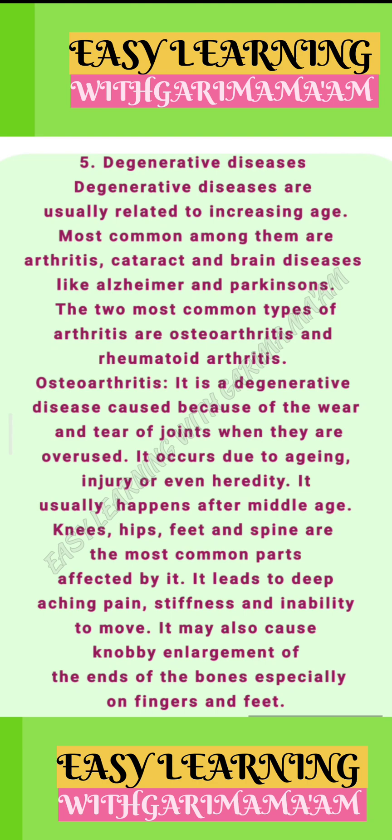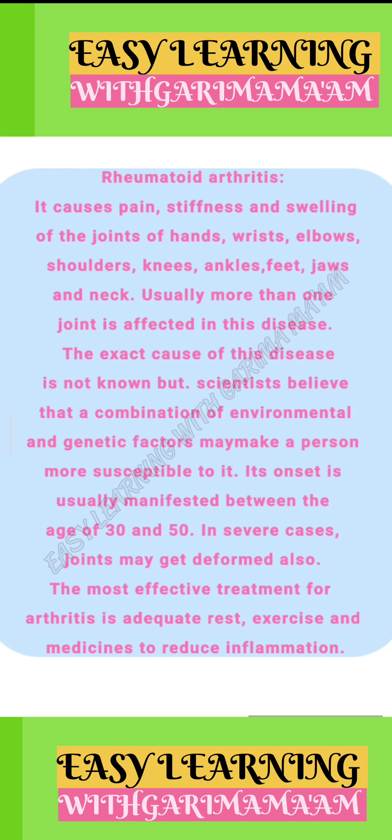Osteoarthritis occurs due to aging, injury, or even heredity. It usually happens after middle age. Knees, hips, feet, and spine are the most common parts affected by it. It leads to deep aching pain, stiffness, and inability to move. It may also cause knobby enlargement of the ends of the bones, especially on fingers and feet. Rheumatoid arthritis causes pain, inflammation, stiffness, and swelling of the joints of hands, wrists, elbows, shoulders, knees, ankles, feet, jaws, and neck.